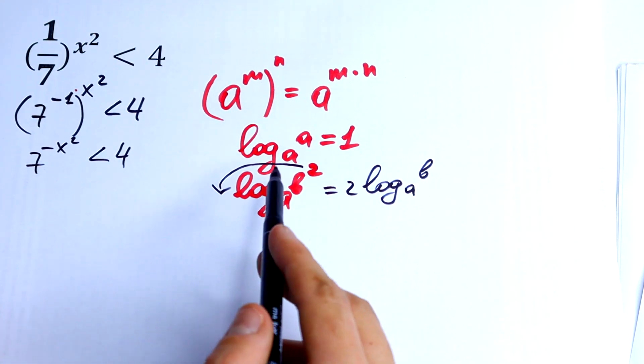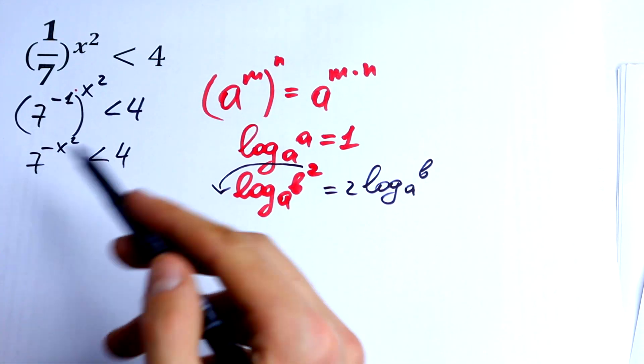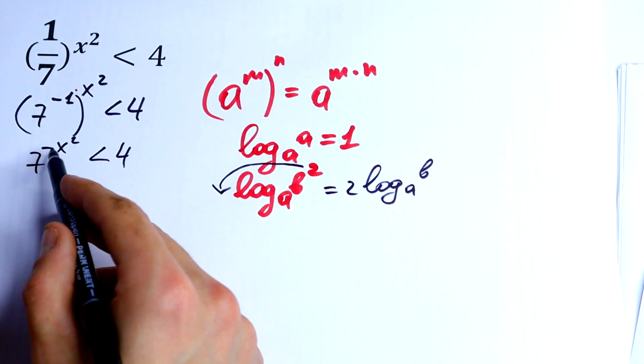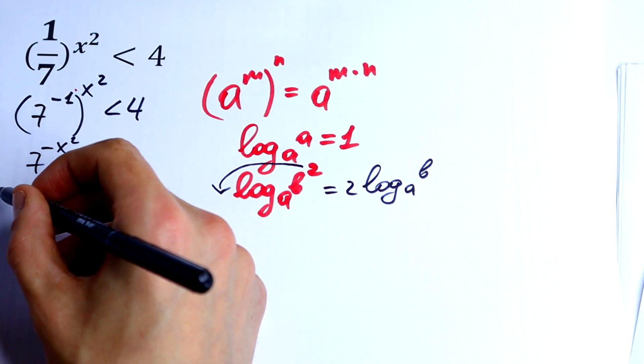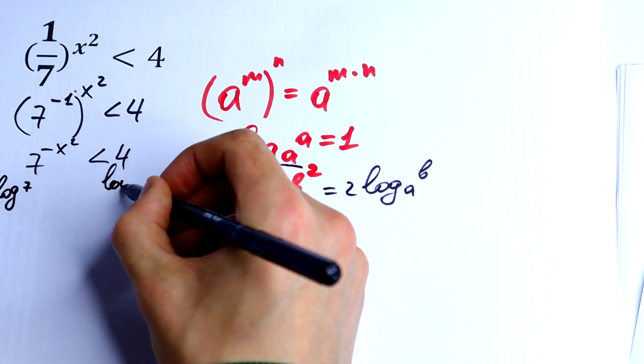So let's take a log from both of the sides, but what a base? Base will be for sure log 7, because we need to get our x right here. So we will get log 7 and log 7 right here as well.